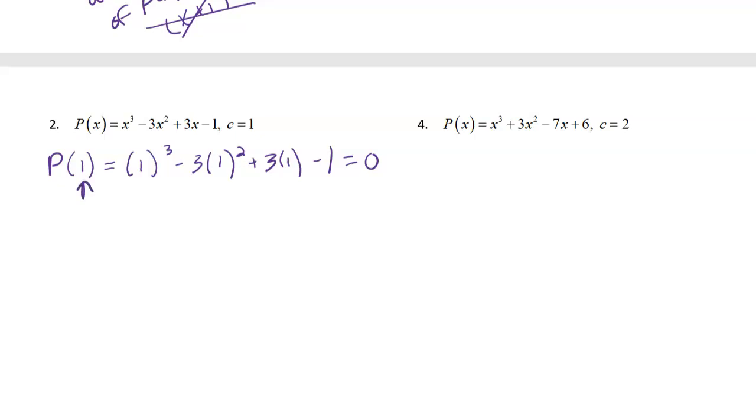So this tells us that 1 is a zero of the polynomial p of x. So I can take my p of x function, and I can say that x minus 1 is one of the factors of that polynomial function. And then I can use division to figure out the rest of this function.